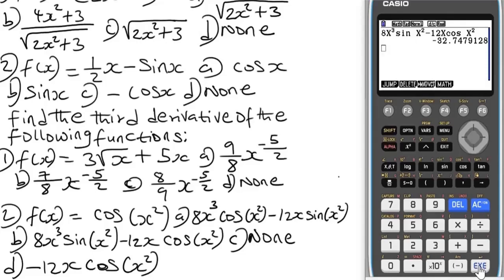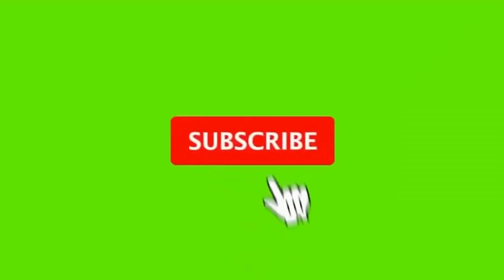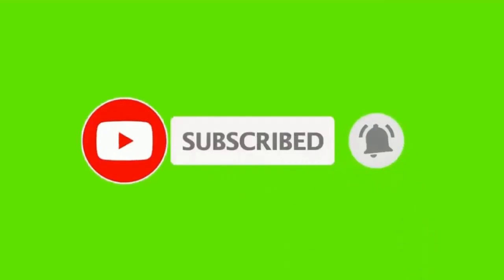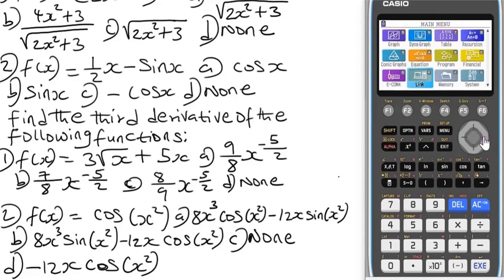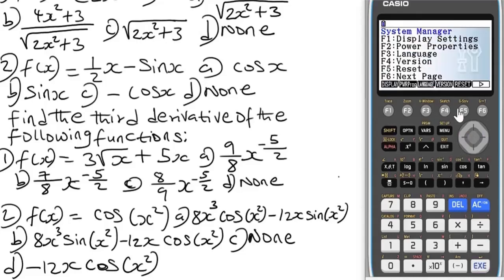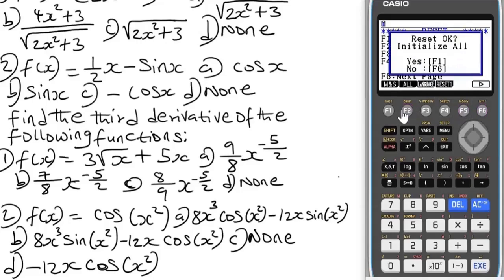This is how you can solve problems involving second derivative and third derivative with the Casio FX-CG50 calculator in seconds for multiple choice questions. If you are new to the channel, hit the subscribe button for more videos like this. Like, share, and comment. Leave your questions in the comment section below. Don't forget to reset your calculator after use: go to Menu, System, EXE, F5, F6, initialize, F2, F1. Thanks for watching — see you in the next video.